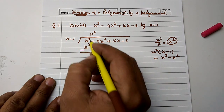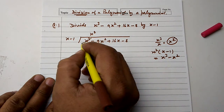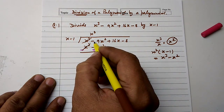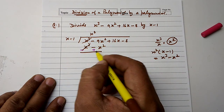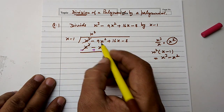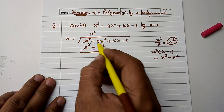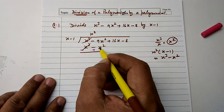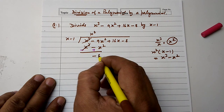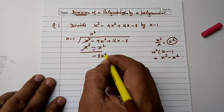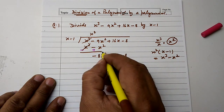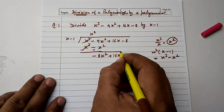The sign is positive here, so the negative will be cancelled. We get minus 9x square plus x square, which gives minus 8x square plus 16x minus 8.